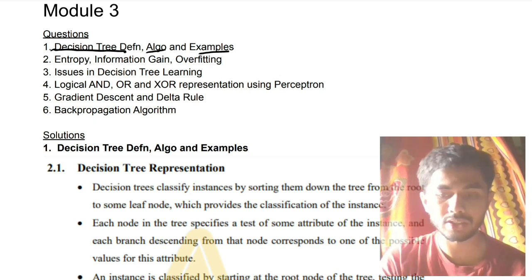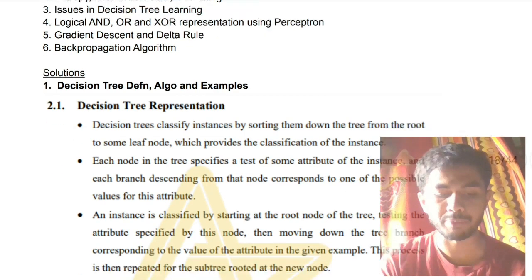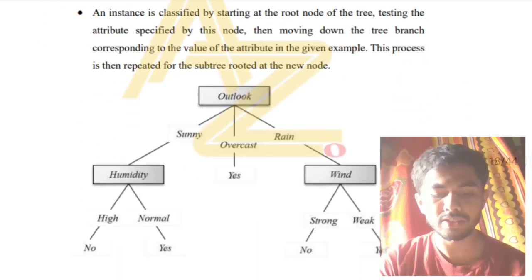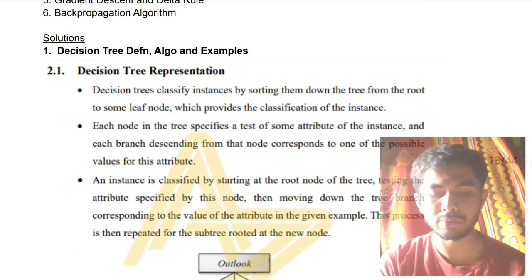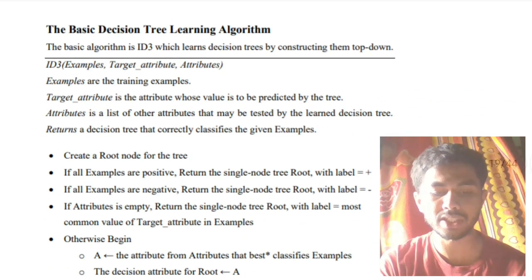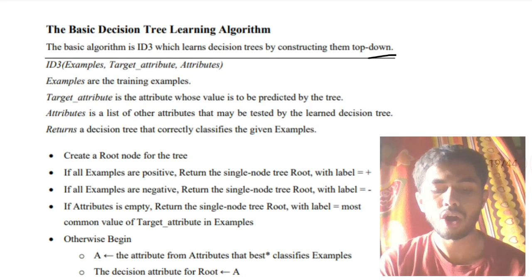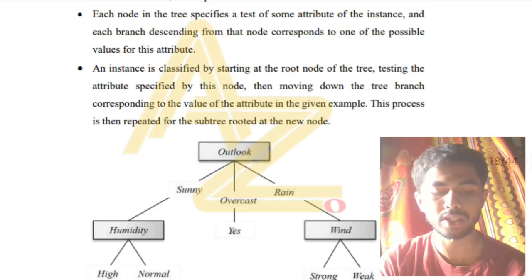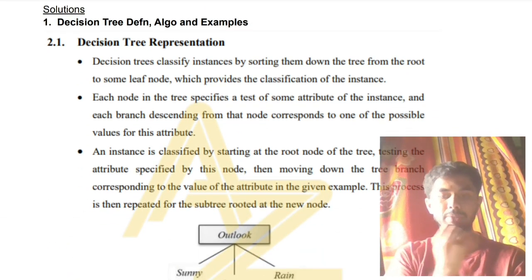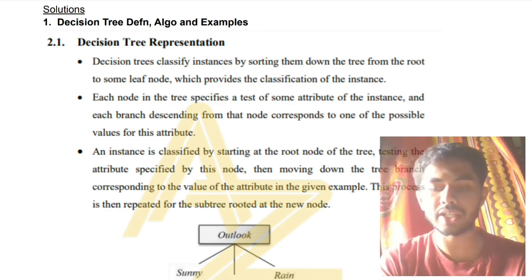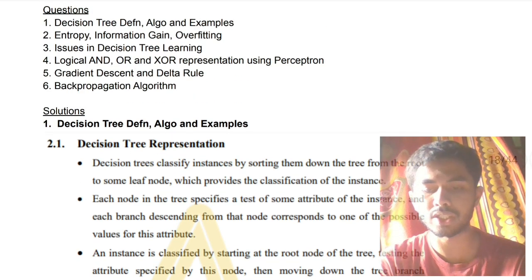You need to understand what a decision tree is. You have to write the example, the theory concepts, and also the algorithm — the basic decision tree or ID3 algorithm. Those three things you have to write in this question. A decision tree is like a tree using which you can form some decisions — it's as simple as that.